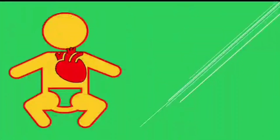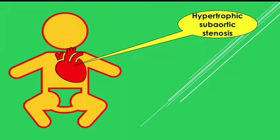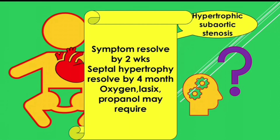The cardiac manifestation is transient hypertrophic subaortic stenosis. This occurs mainly due to ventricular septal hypertrophy. Symptoms usually resolve by two weeks, and septal hypertrophy resolves by four months. These children mostly require supportive therapy; sometimes Lasix or propranolol may be needed.